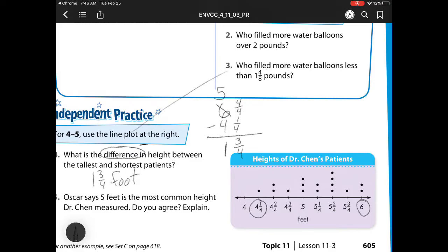My next one says Oscar says 5 feet is the most common height Dr. Chen measured. Do you agree? So he's saying this is my most common, but if I look over here, 5 and 2 fourths actually has one more dot. So there are more dots, but instead of saying dots, I'm going to say data. There are more data, and remember data is actually plural, even though it seems like it should be there is more data. There are more data at 5 and 2 fourths than 5 feet.